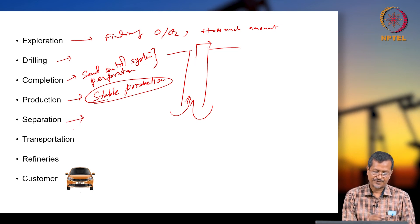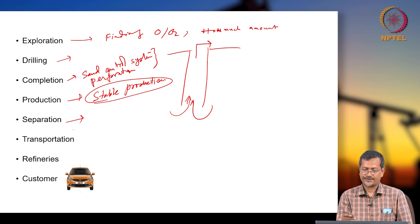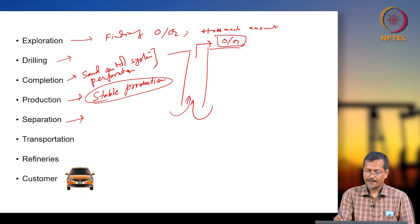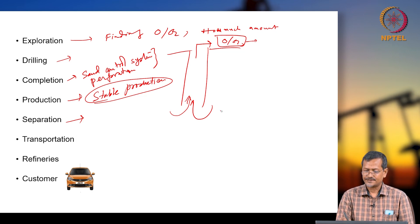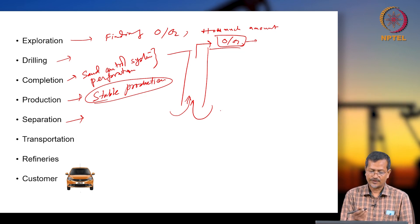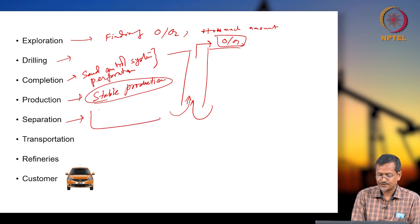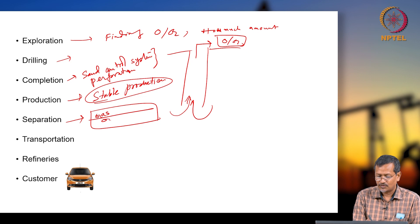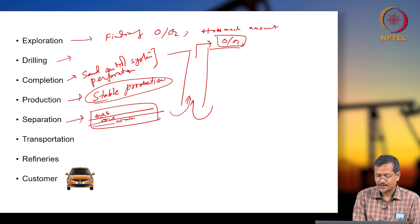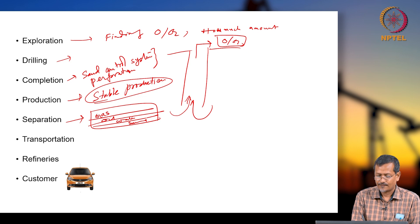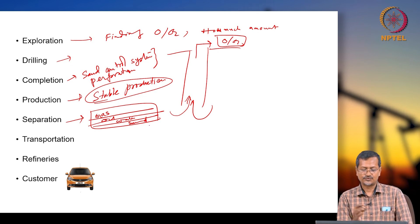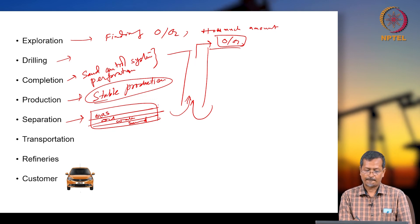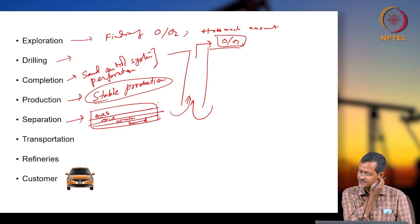Stable production means that with time the productivity will not change — you are getting a longer duration of certain production with no difficulty. Then there will be separation. Once you have production at the surface with oil and gas, you cannot send the same crude oil and gas to your customer — you have to separate oil, gas, water, and sand. There will be certain mechanisms to separate all of these.